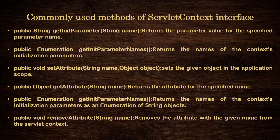Public void setAttribute(String name, Object) — sets the given object in the application scope. Public Object getAttribute(String name) — returns the attribute of the specified name.